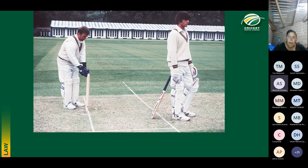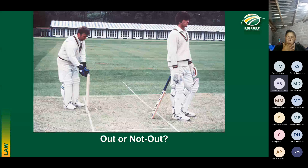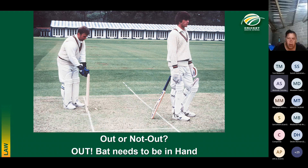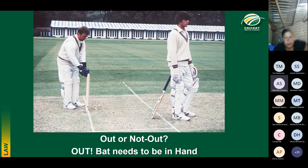The answer is: this is out, run out. Why? The bat needs to be in the hand of the striker. Because this bat is not in the striker's hand — even though it is behind the popping crease — because the bat is not in the hand of the striker, the batter in this picture is out.